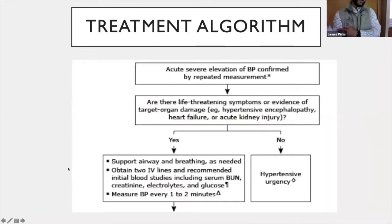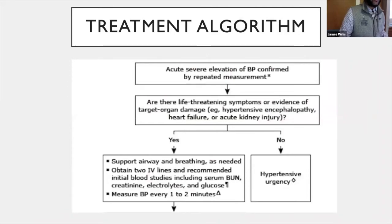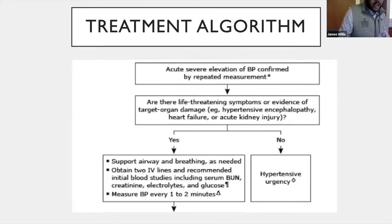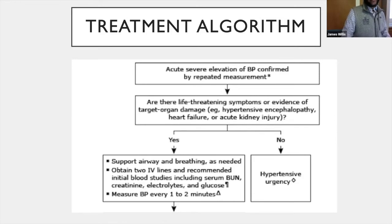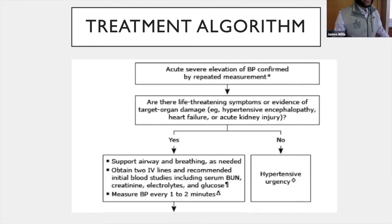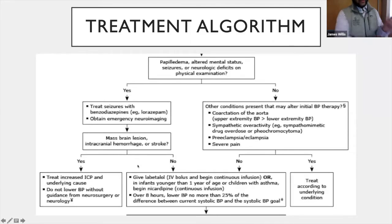For the overall management algorithm: if a child has elevated blood pressure, first confirm accurate measurements, repeat the readings, and check all four limbs. Identify any life-threatening symptoms or end organ damage — heart failure, etc. If absent, that's hypertensive urgency: obtain a workup and arrange primary care follow-up. If life-threatening symptoms are present, treat immediately — establish ABCs, obtain IV access, oxygen, and monitoring, and continue measuring blood pressure.